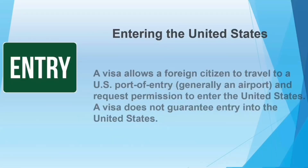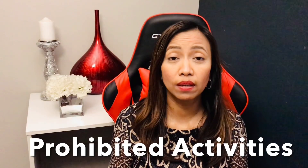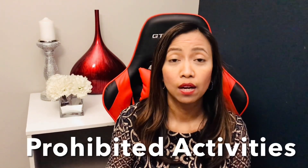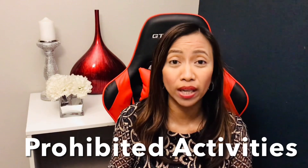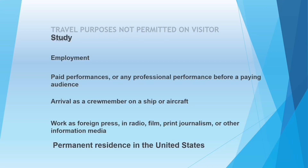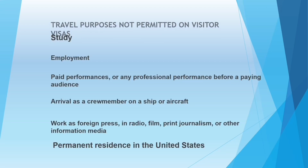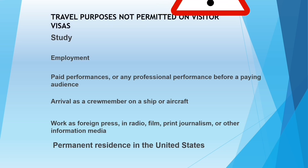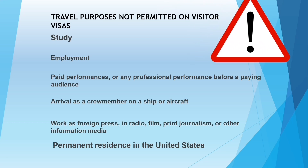There are two kinds of tourist visa: the B1 visa and the B2 visa. A visa allows a foreign citizen to travel to a U.S. port of entry and request permission to enter the U.S., but the visa is not a guarantee of admission. There are activities that are prohibited — for example, if you have the intention of working in the U.S. you will be denied a tourist visa. You cannot study, be employed, have paid performances, arrive as a crew member, work as foreign press, or stay in the U.S. permanently.